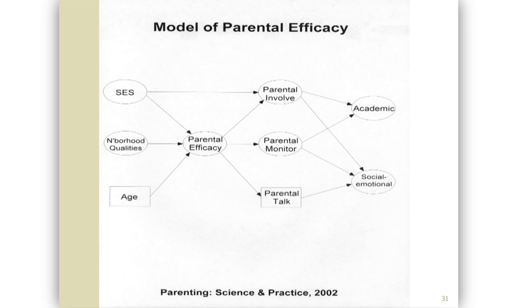Here's one looking at parent efficacy. In this model, there are a couple of observed-only variables — for instance, age, where we don't need six measures since we have gold standard measures like birth certificates. All of the models with latent variables have multiple observed indicators, just not shown for simplicity. That's pretty typical, because otherwise the model gets so complicated it takes up two journal pages.